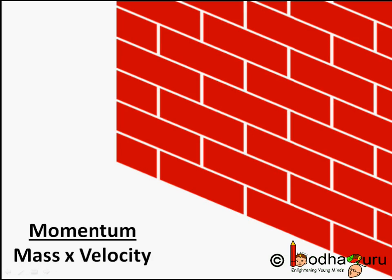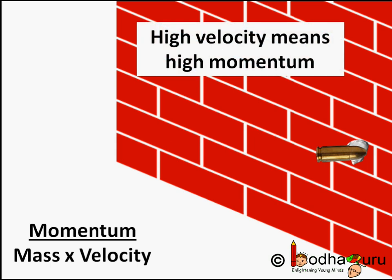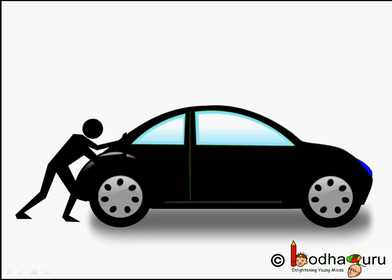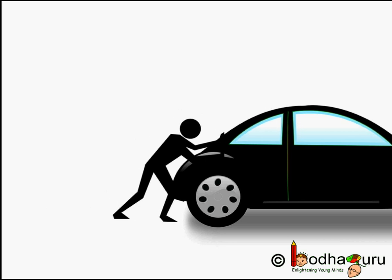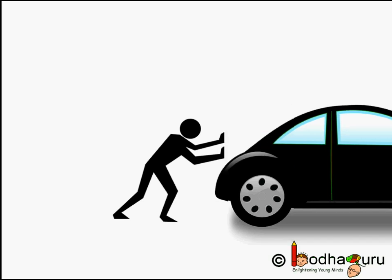A fast moving bullet has huge momentum because its velocity is very high. If you push an object and it moves, it actually gains some momentum. For example, if you push a car with a dead battery or bad starter, it gains some momentum and finally it starts.